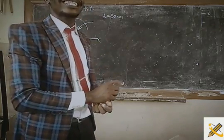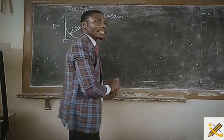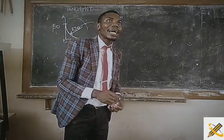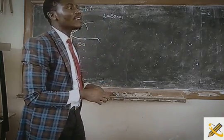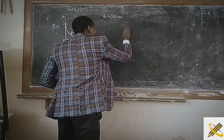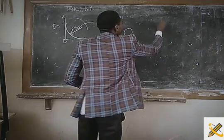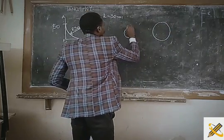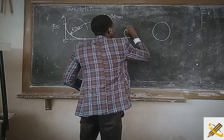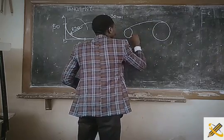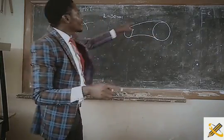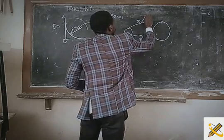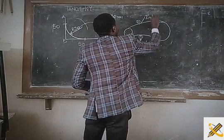The second principle is the principle of external tangency. If a tangency is said to be external, look at this scenario: I have a smaller diameter circle here and a bigger diameter circle here. I'm having a curve — this arc here, arc one, is going to do an external tangency, and another is an internal tangency.